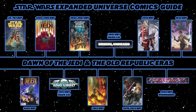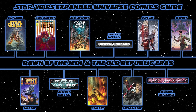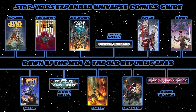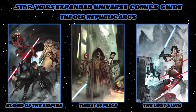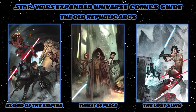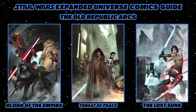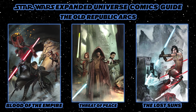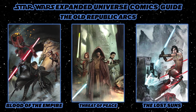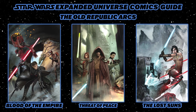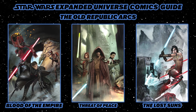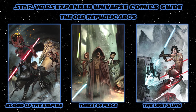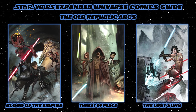Next are the Old Republic MMORPG tie-in comics, initially released as webcomics before getting single issues and paperbacks. The first story arc is The Old Republic: Blood of the Empire — three issues following Sith apprentice Teneb Kel. The next arc, Threat of Peace, also three issues, focuses on the Treaty of Coruscant and its aftermath. The final arc, The Lost Sons, stars Theron Shan, son of Jedi Master Satele Shan.